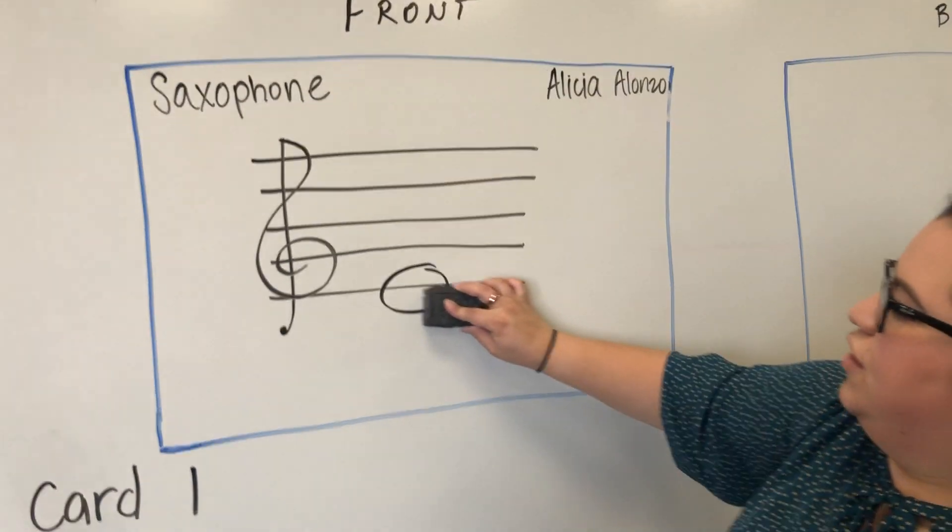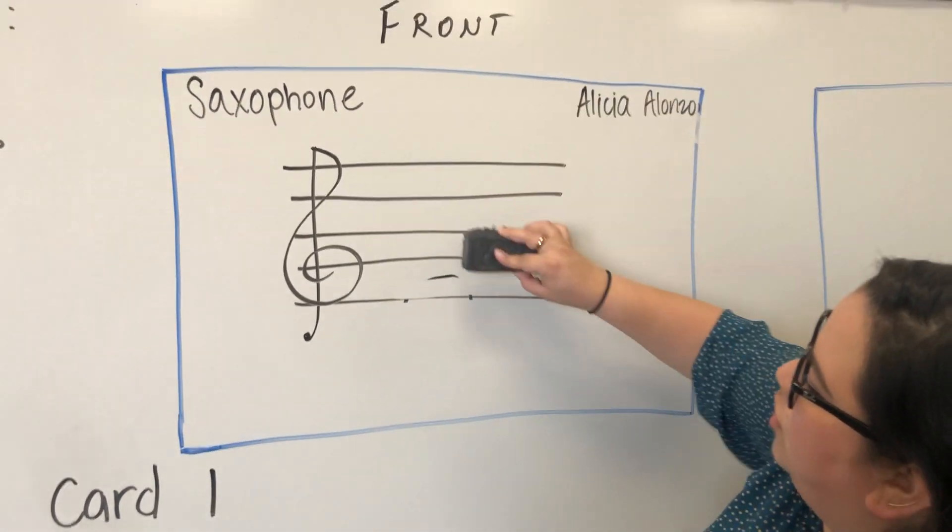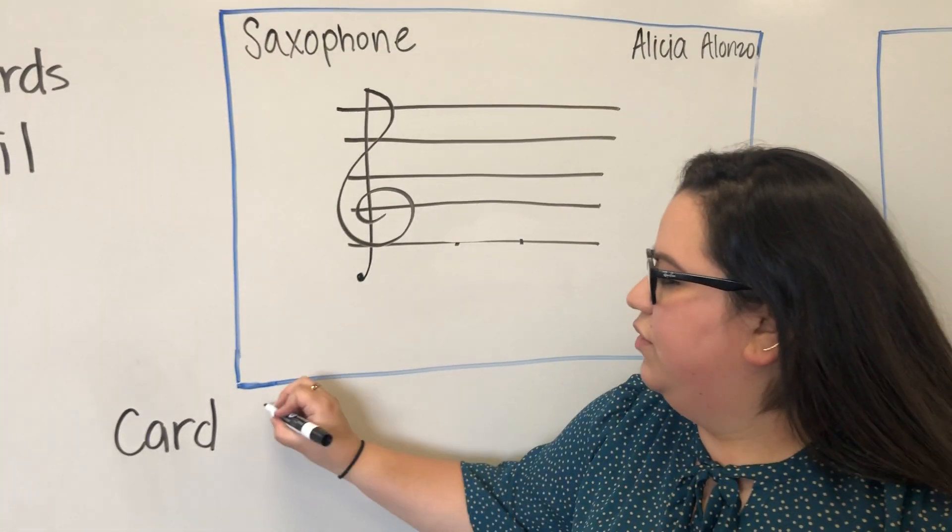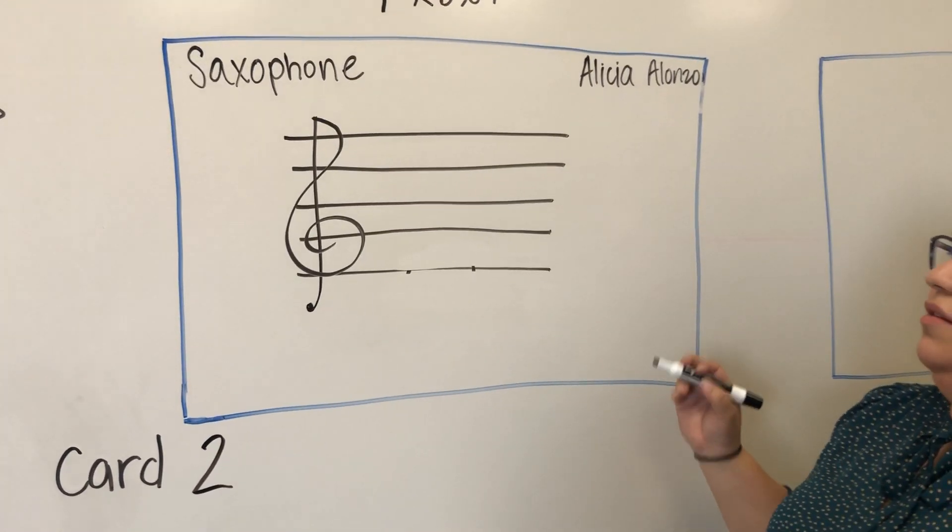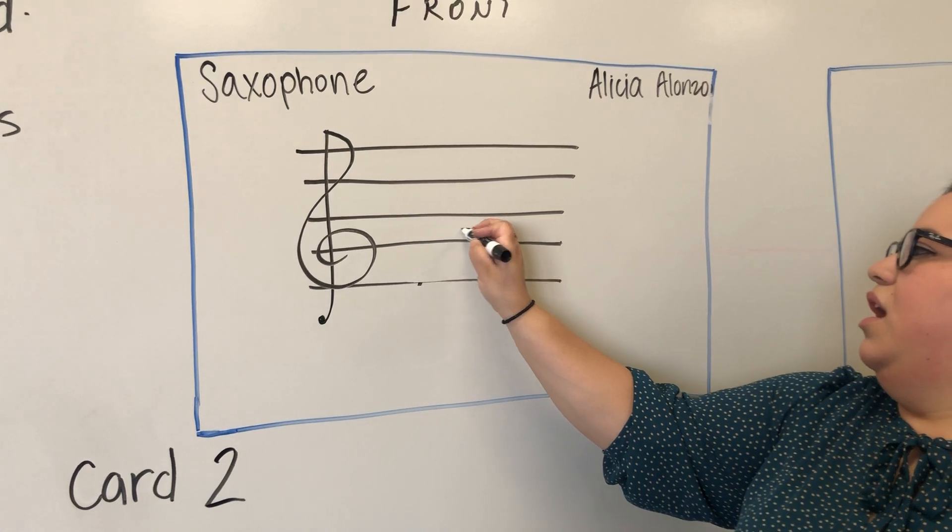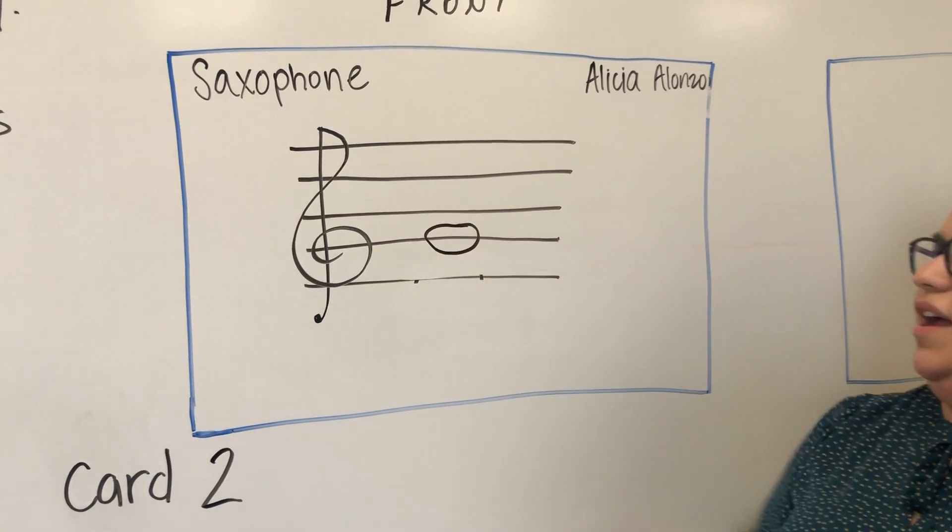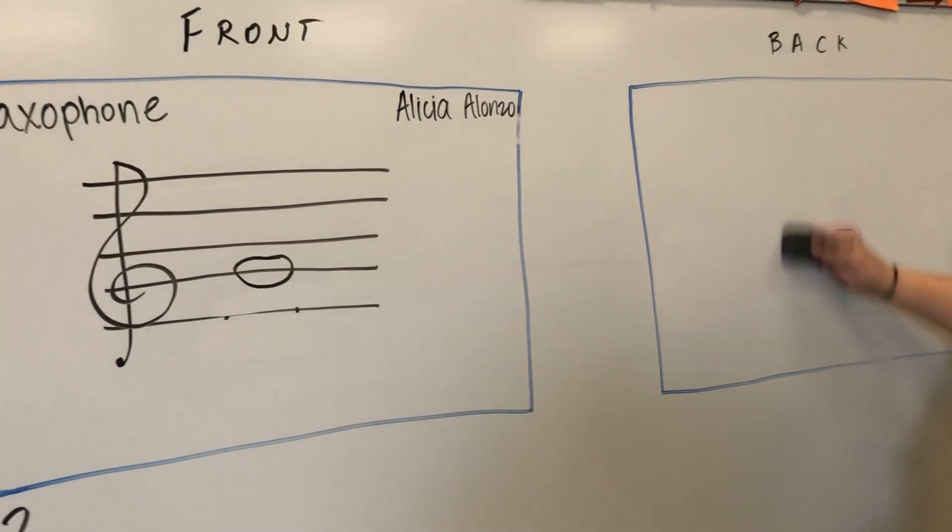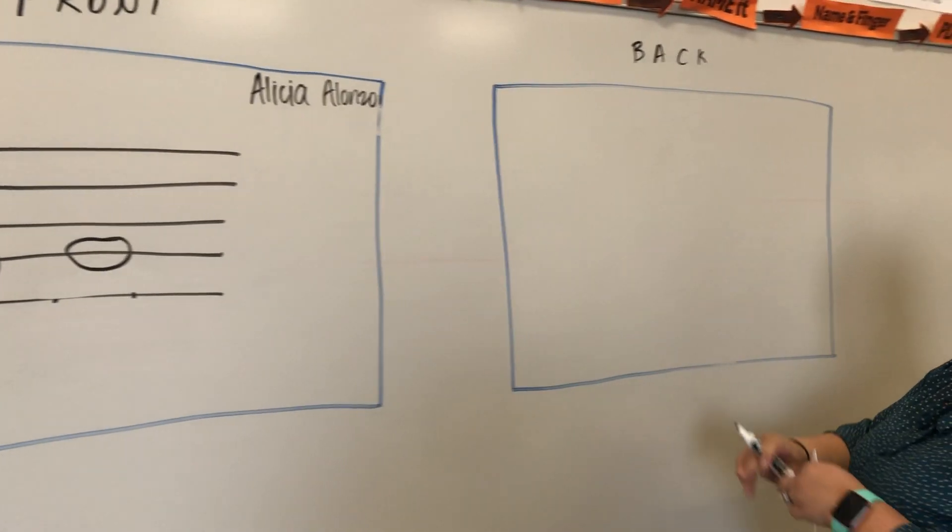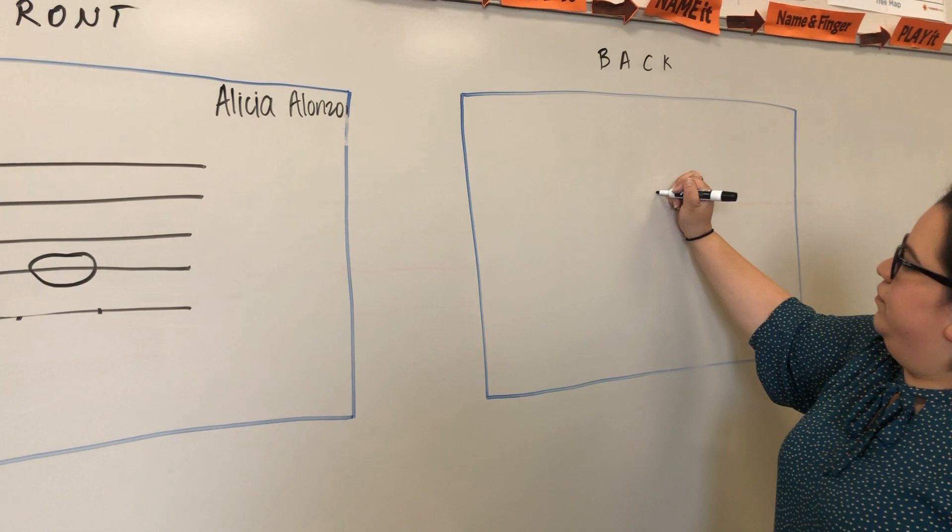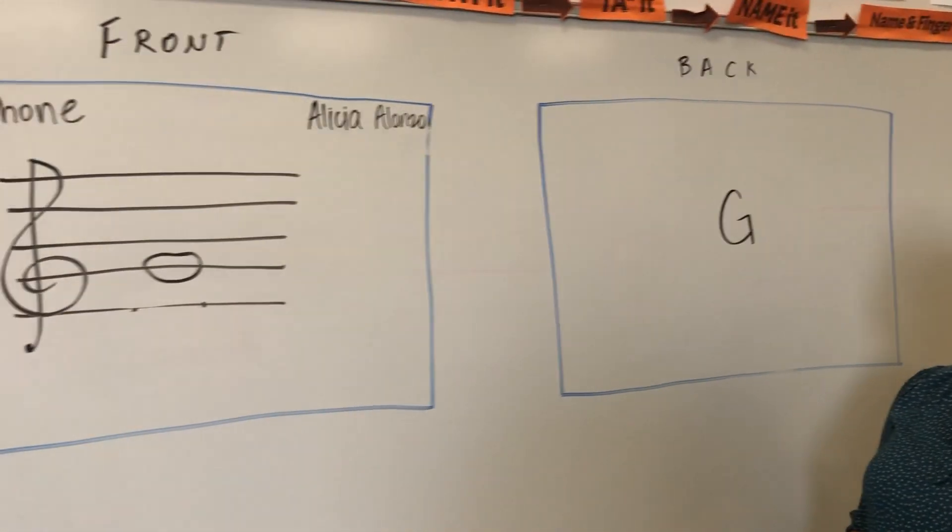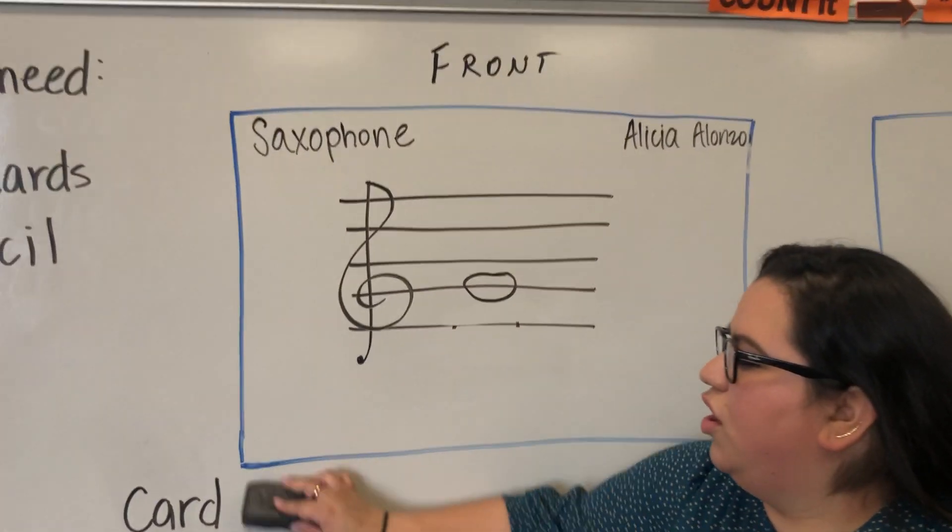Then you're going to take your second card. Don't erase, I'm erasing - you're going to just go to the next card. On the next card, you're going to draw a whole note or circle around the G line. We know it's G because we're on G clef. It's kind of the first note that we look at when we look at the treble clef. On the back of that card, write G.